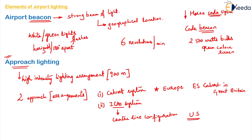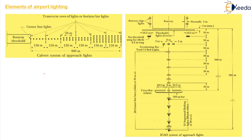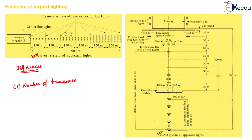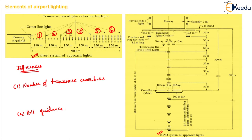There are two major differences between the Calvert system and the ICAO system, which can be observed in their diagrams. The differences are mainly based on the number of transverse crossbars and the roll guidance. In the Calvert system, there are six transverse rows of lights, centrally placed at a distance of about 150 meters apart, for a total approach lighting length of 900 meters. More lights appear at the start of the approach and reduce as you near the runway threshold.